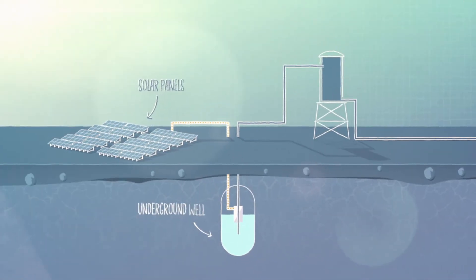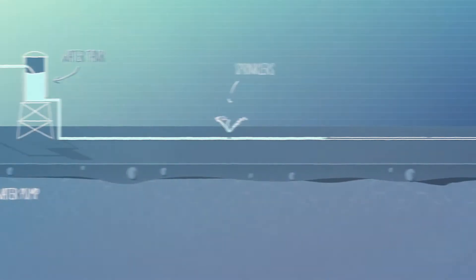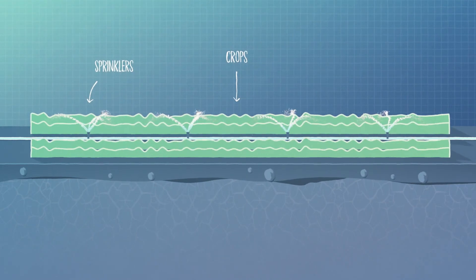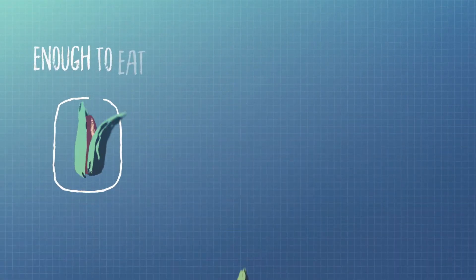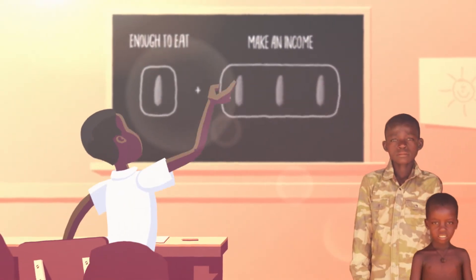Solar powered water pumps would allow farmers like Selena to easily access underground water throughout the year, increasing her crops with an efficient sprinkler system to provide enough food to eat and make a much needed income to send her children to school.